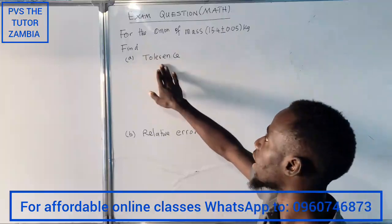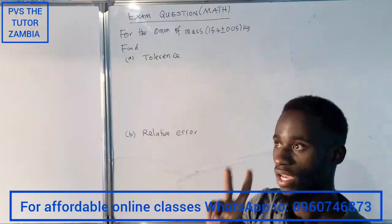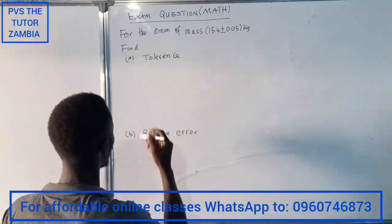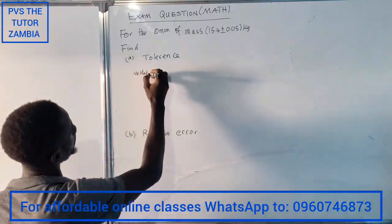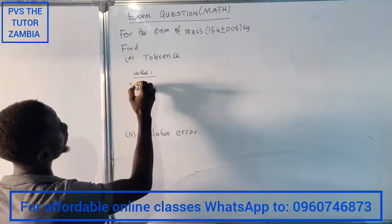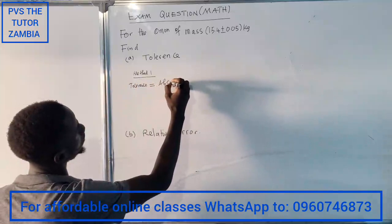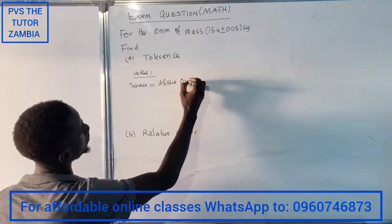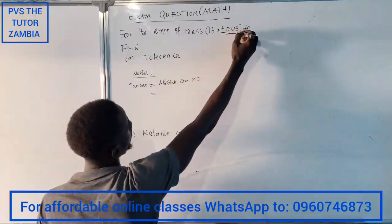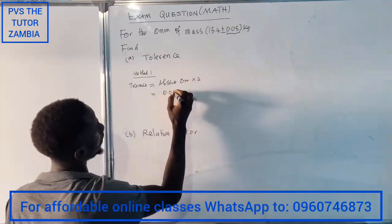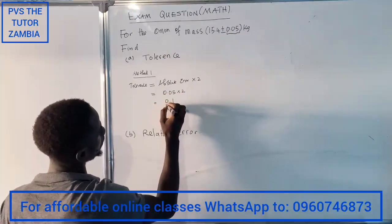You can find the tolerance in two ways. Method one: the tolerance is equal to the absolute error multiplied by two. Our absolute error in this case is 0.05, and we multiply that by two, giving us 0.1. So 0.1 is our tolerance using method one.